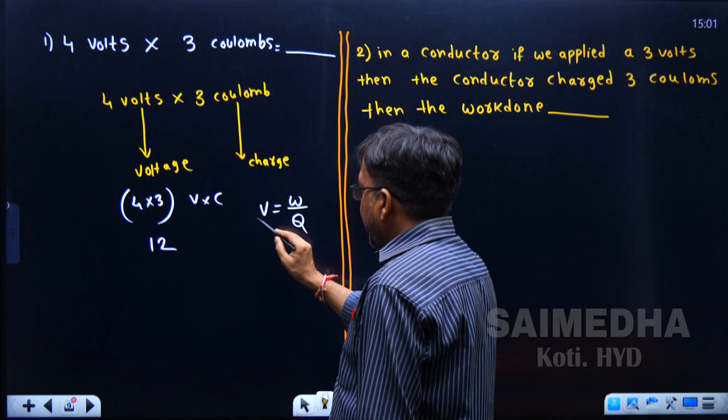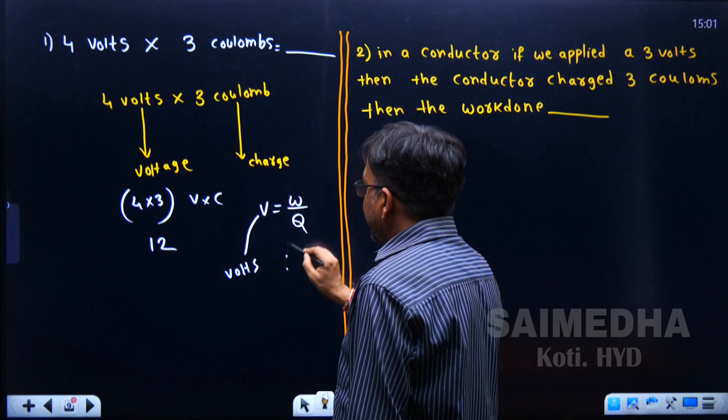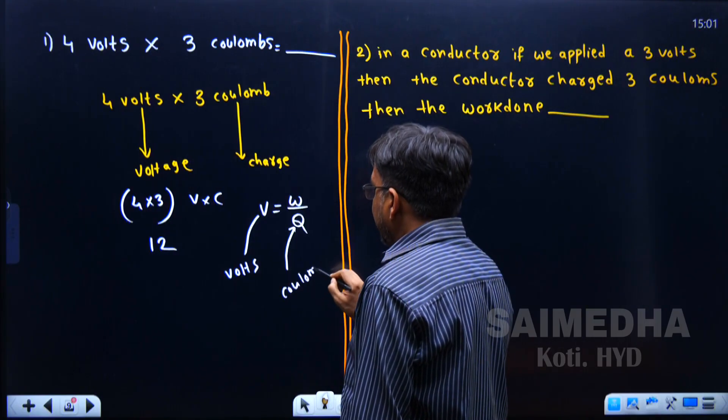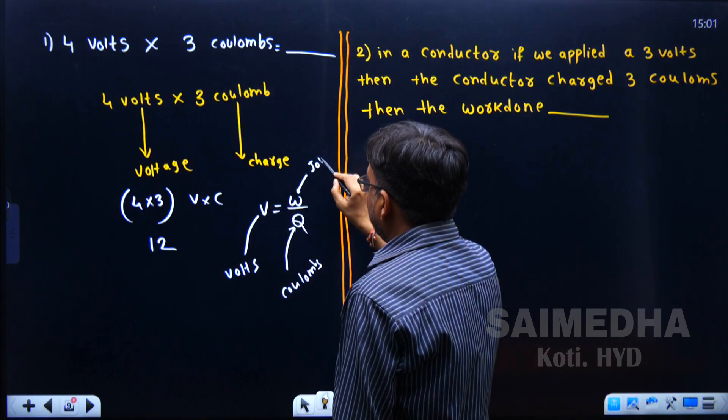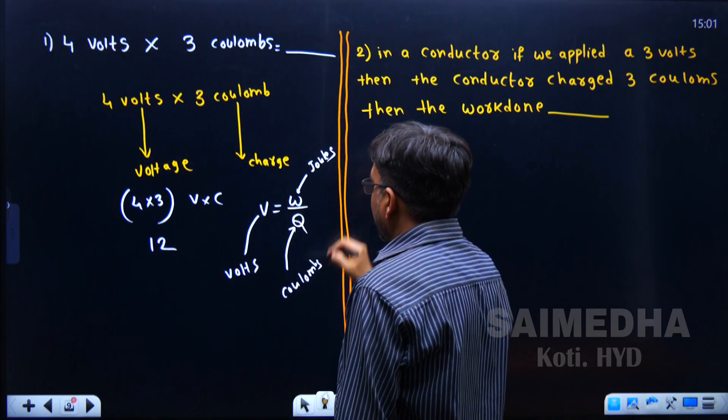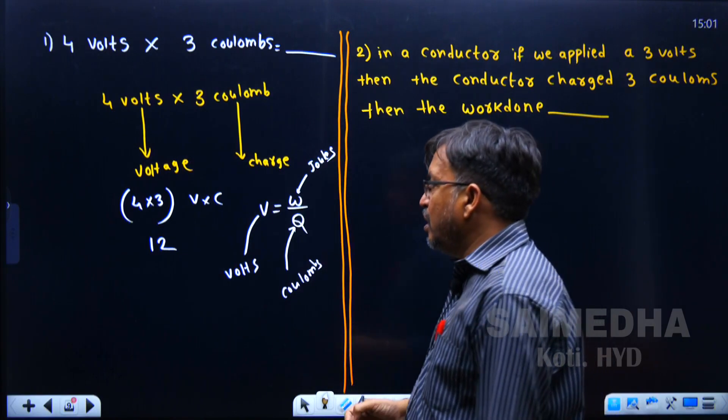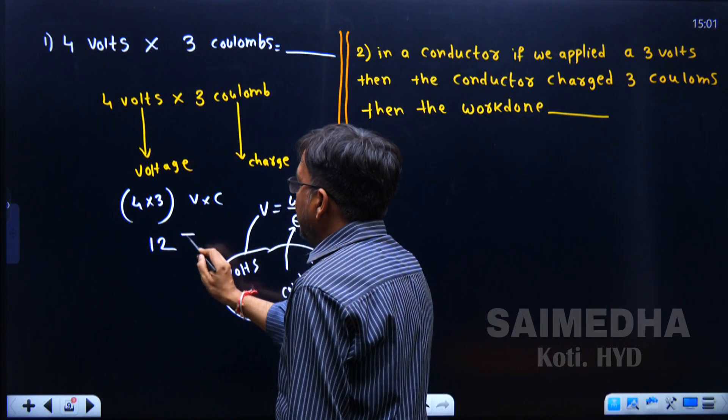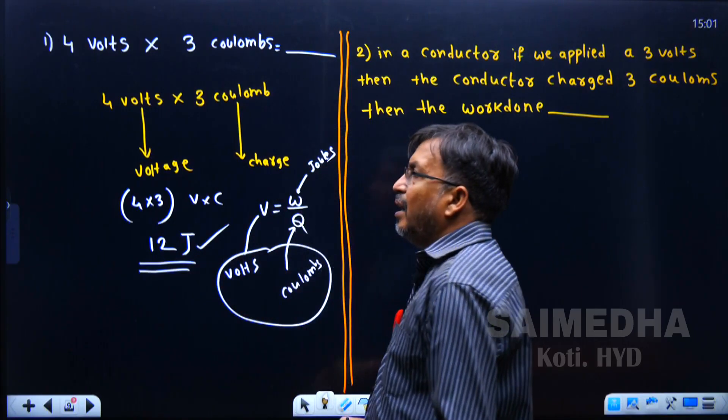So what is the units of voltage? Volts. What is the units of charge? Coulombs. And what is the units of work done? Yes, joules. So volts into coulombs equals joules. The correct answer here is 12 joules.